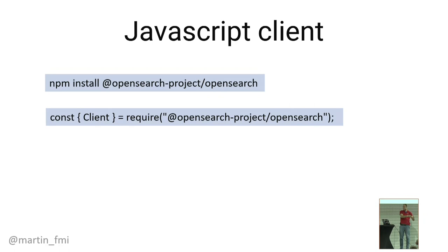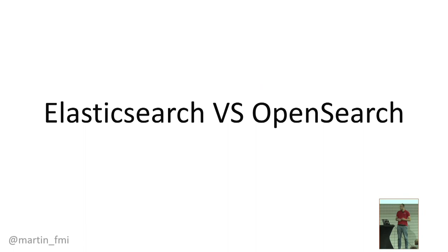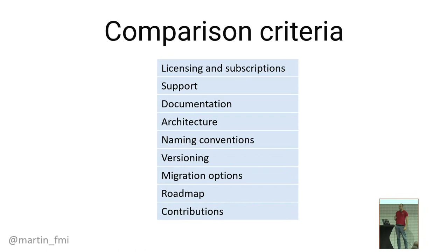Let's do a brief comparison between Elasticsearch and OpenSearch on specific criteria: licensing and subscriptions, support, documentation, architecture, naming conventions, versioning, migration options, roadmap, and contributions.